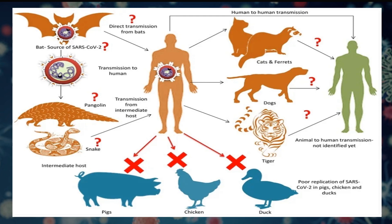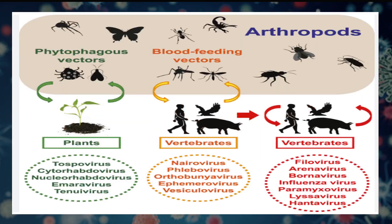Some viral infections like rabies can be transmitted from an animal to a person. Transmission of zoonotic viruses may occur by a variety of routes — either directly or through an intermediate host. Once transmitted, zoonotic infections can spread from human to human or from human to animals. Insects like mosquitoes, ticks and flies act as mechanical or biological vectors transmitting viral infections — in plants through phytophagous vectors, or in vertebrates through blood-feeding vectors. Malaria and dengue are two very common infections spread by mosquitoes.